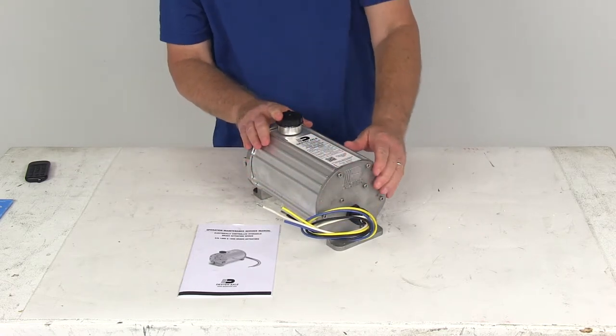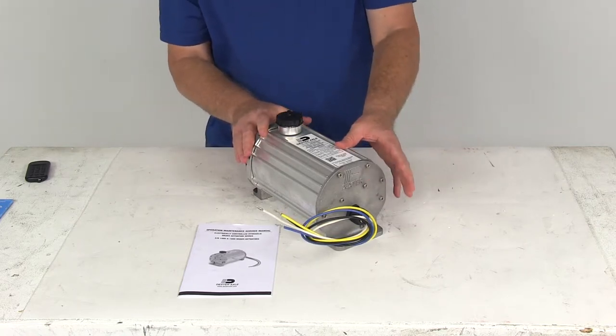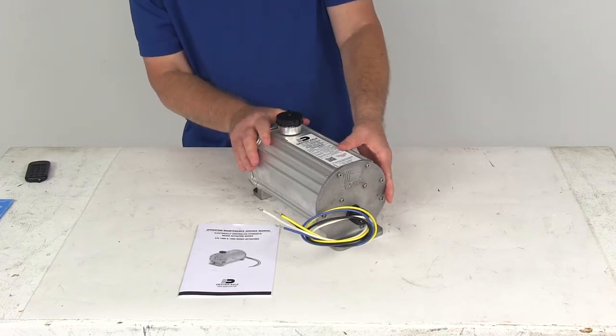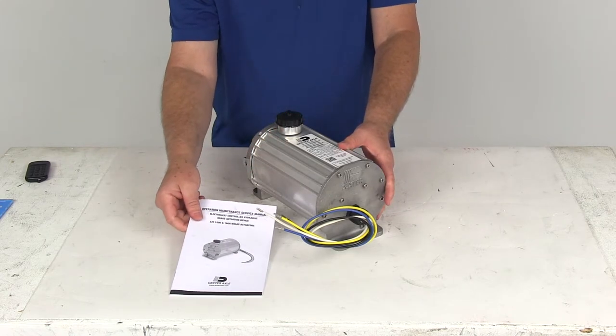This actuator requires a minimum 9 amp hour breakaway kit. This part will meet or exceed all Department of Transportation regulations and federal braking requirements. It comes with a nice operations manual.